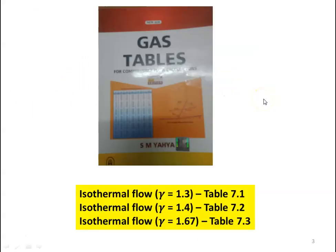These are the gas tables which we will be referring to for solving the problems. There are three tables available for isothermal properties: table 7.1 for gamma equal to 1.3, table 7.2 for gamma equal to 1.4, and table 7.3 for gamma equal to 1.67. The property ratios for isothermal flow can be collected from tables 7.1, 7.2, and 7.3 respectively.